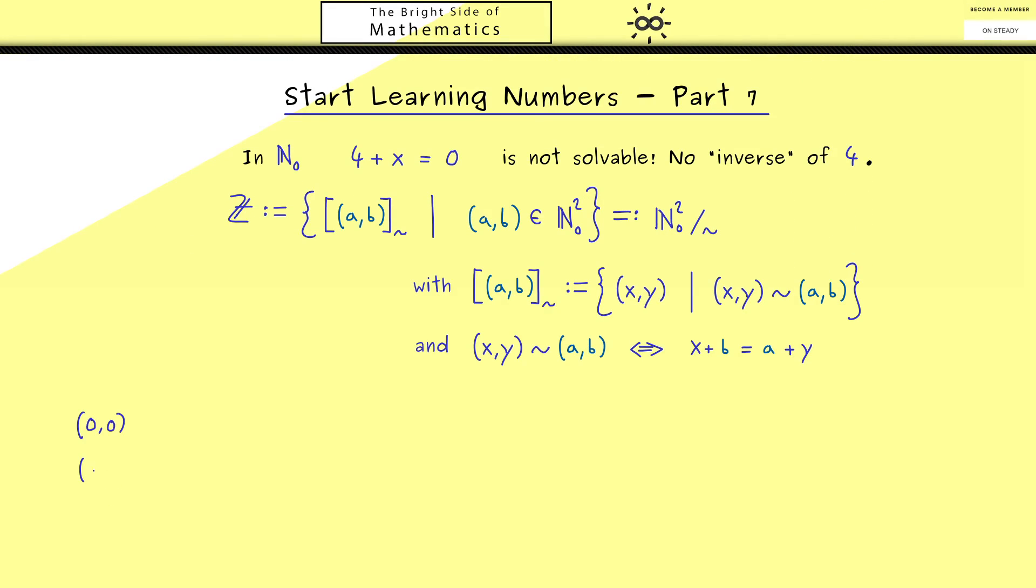Now in the last video we have already seen that we get all the equivalence classes when we go through all the natural numbers in the first component where we keep the second component as 0. And afterwards we also have to go through all the natural numbers in the second component. Hence here we have indeed all the elements in ℤ.